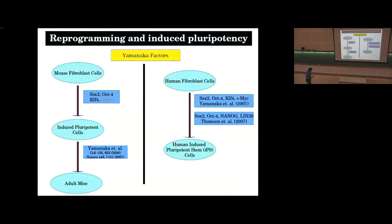So now, instead of having to harvest stem cells from embryos, you can take any cell in your body and, under the action of these four transcription factors, make it go back to the stem cell state.